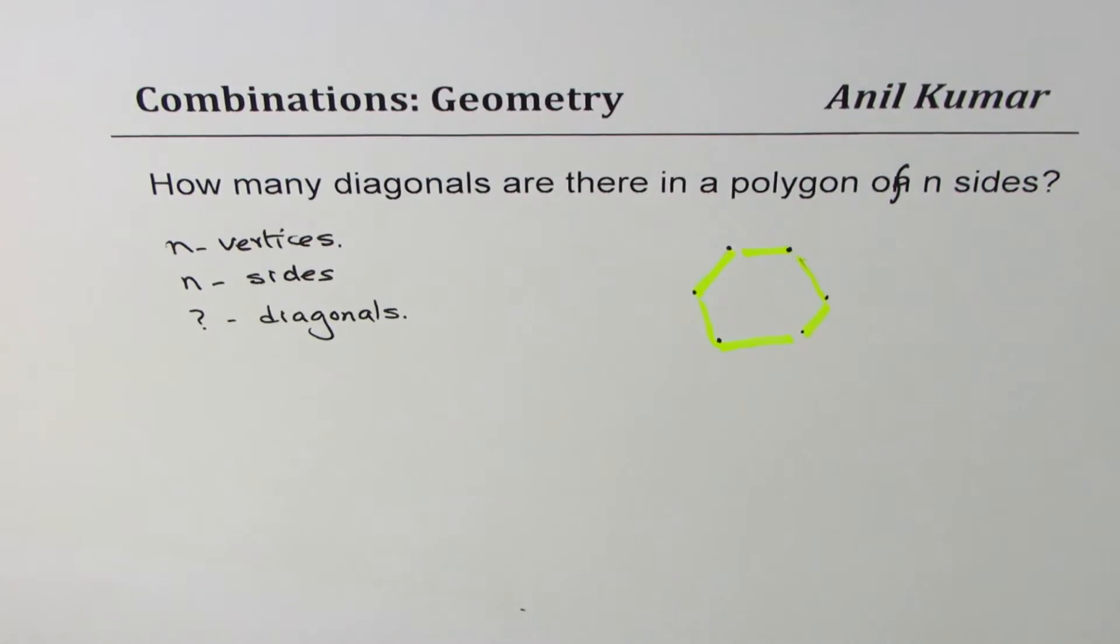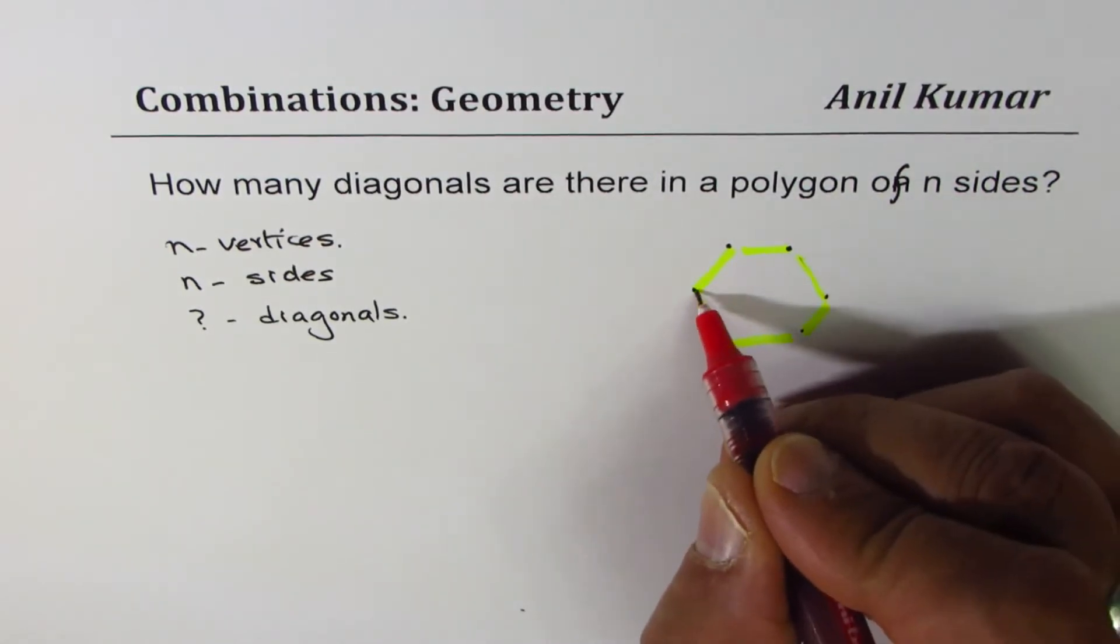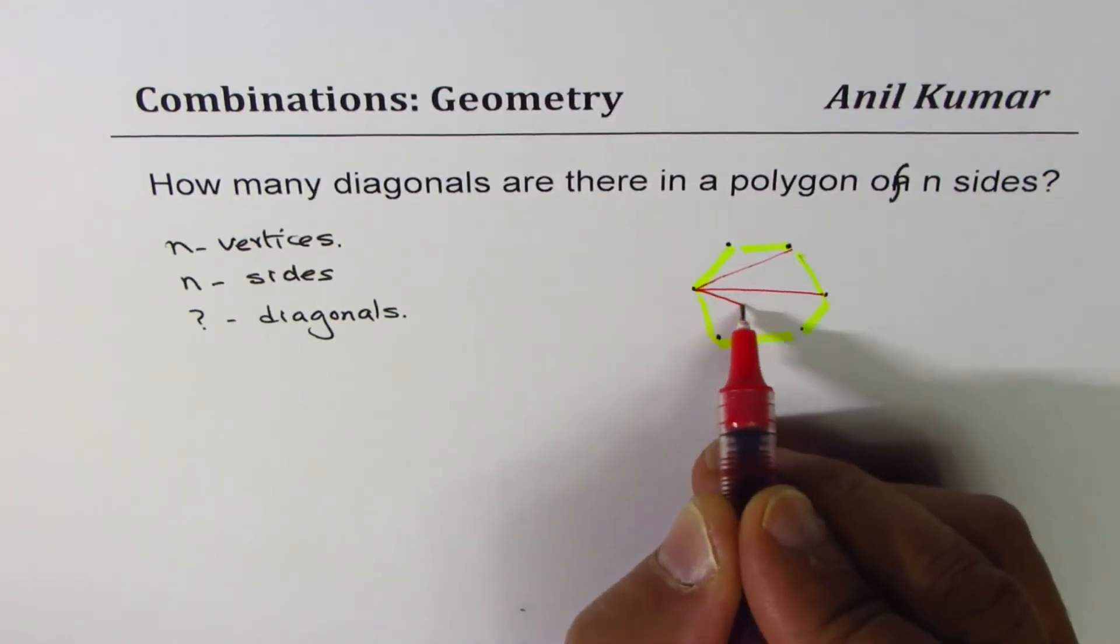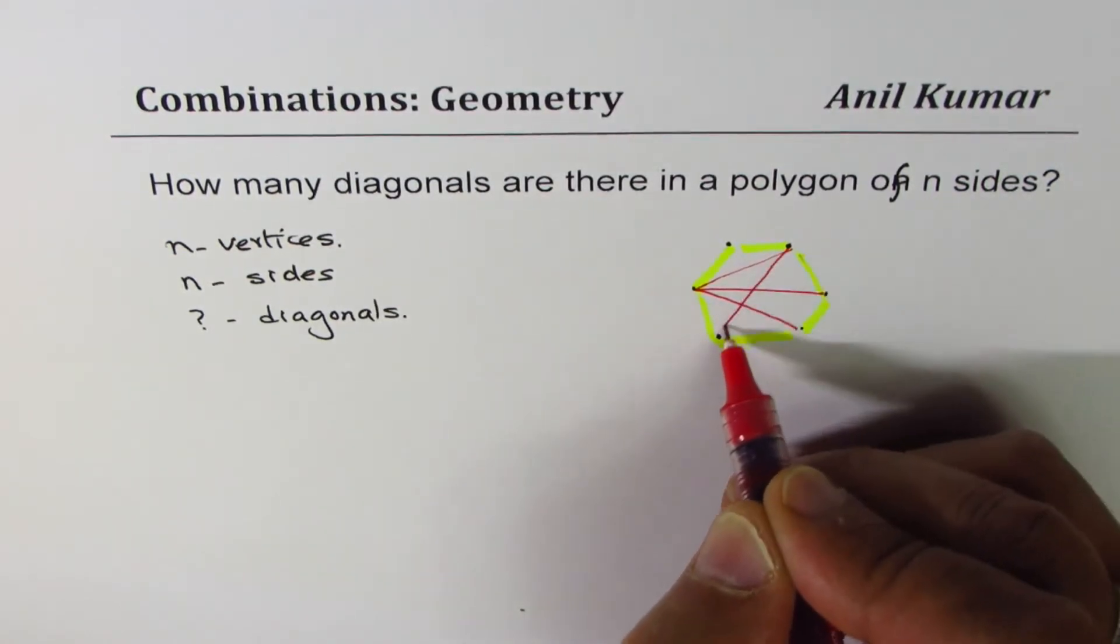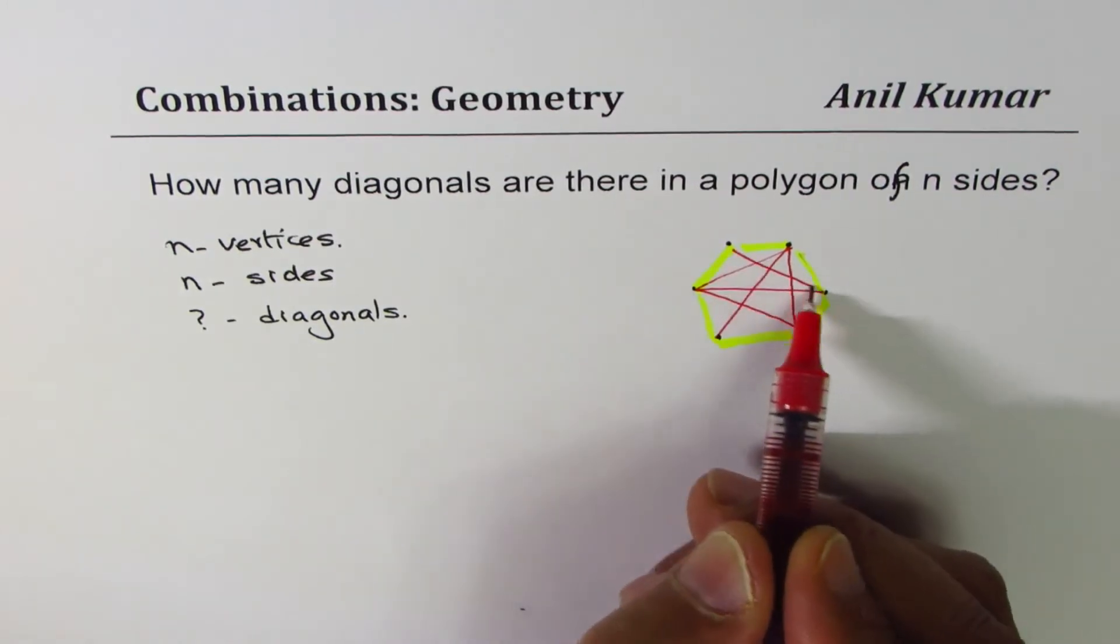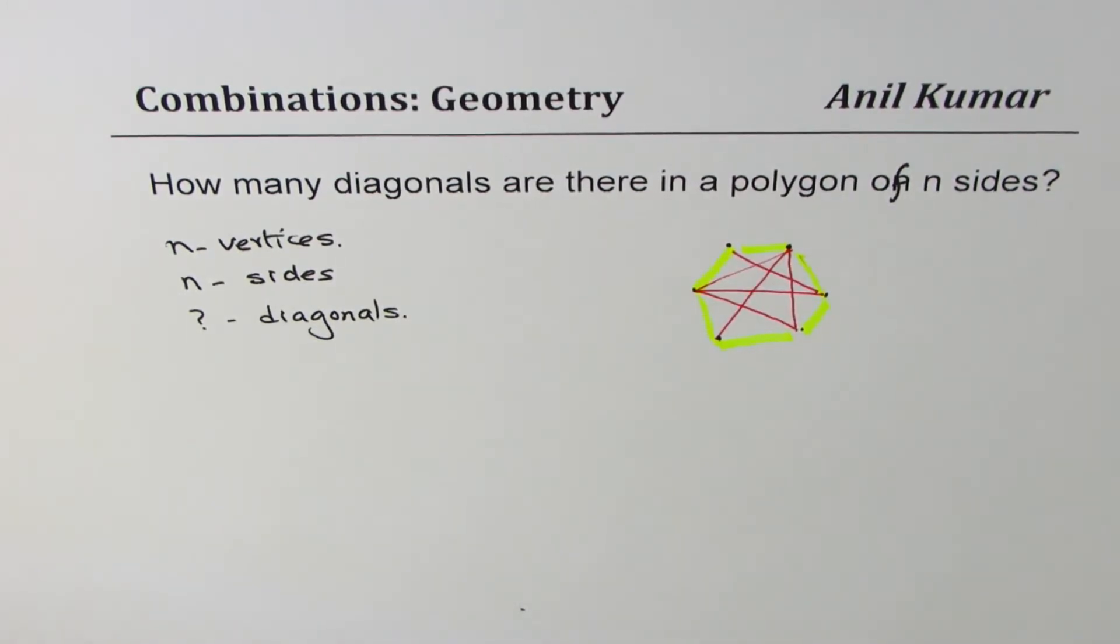And we could also join with these lines, which are called diagonals. So these are the diagonals we're talking about. That is how we can make diagonals. So we want to know how many diagonals are there for n-sided polygons. I hope the question is absolutely clear.